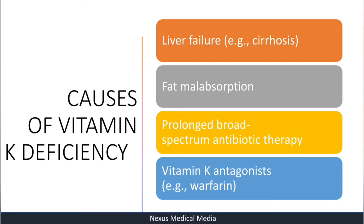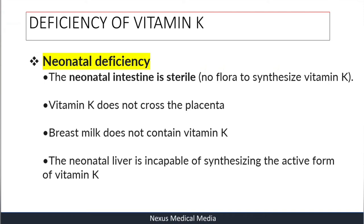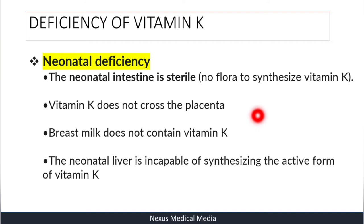A fifth cause is neonatal deficiency, which is a specific scenario. The neonatal intestine is sterile — there is no flora to synthesize Vitamin K. Vitamin K does not cross the placenta, so the fetus receives none that way. Breast milk also does not contain Vitamin K, so the only route is via intramuscular injection shortly after birth.